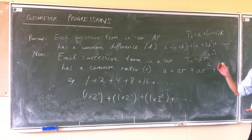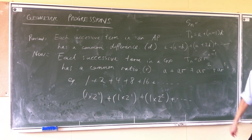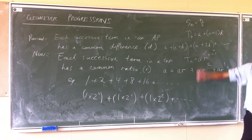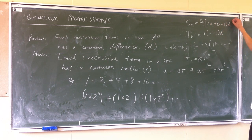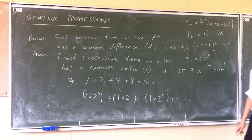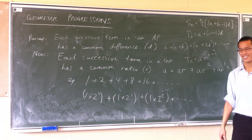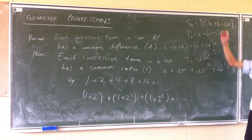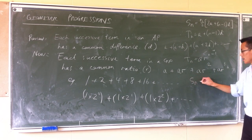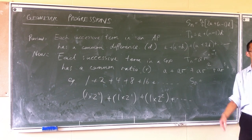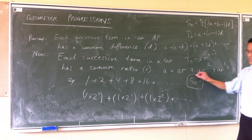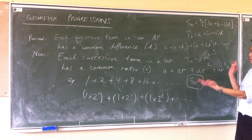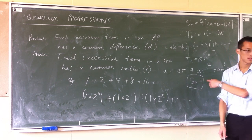We used this idea to come up with the sum of the first n terms in an AP — we paired terms up, and if there are n terms there are n over two pairs. Now, what about a geometric progression? How would you work out the sum of a geometric series? The pairing up method doesn't quite work the same way, so I'll let you have a think about it. Play around with the number of terms in a geometric progression and see what you can come up with for the sum of the first n terms.